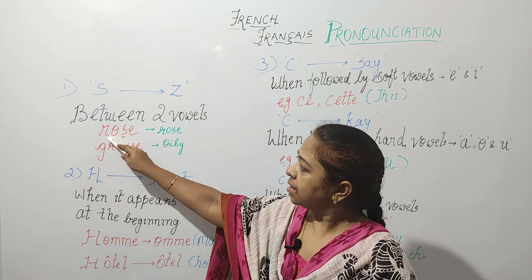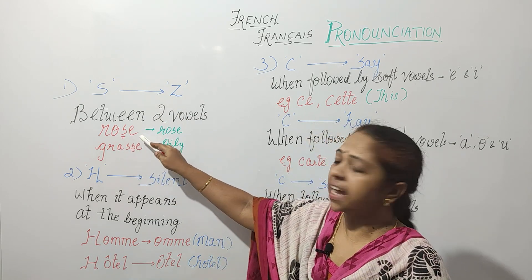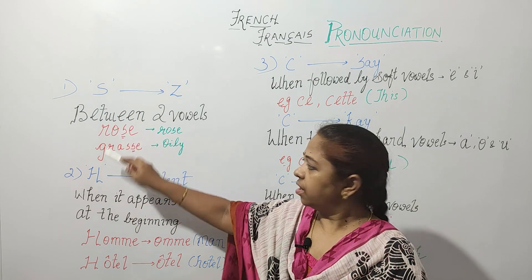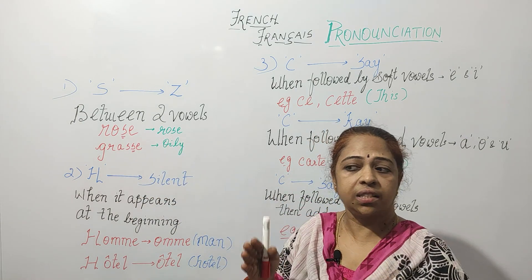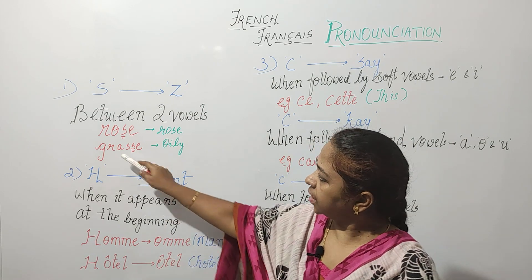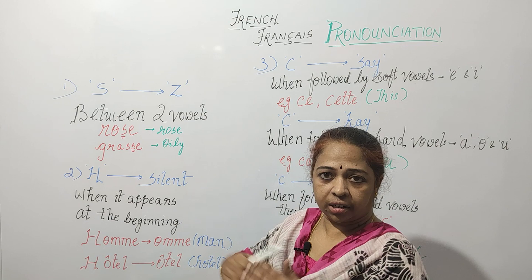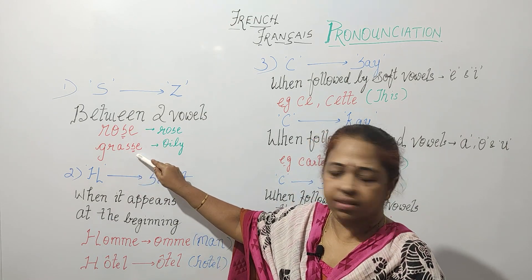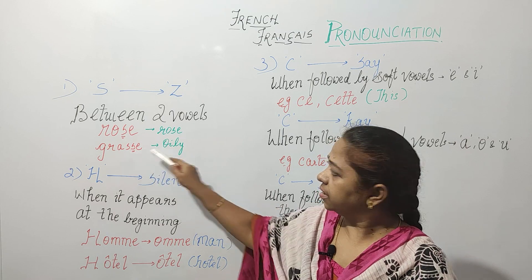For example, 'rose' is not pronounced as 'rose' but as 'roze'. However, if you want the S sound to be pronounced as S, you rectify this by adding an extra S — for example, 'grasse,' which means oily.